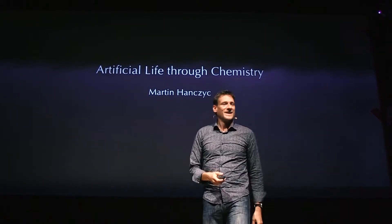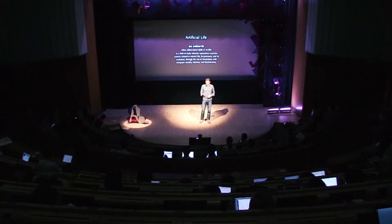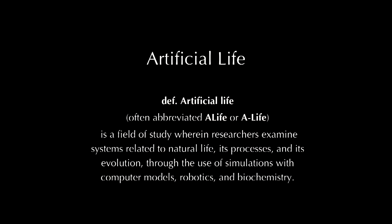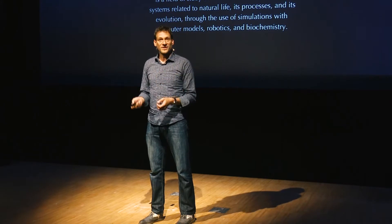I want to introduce you to the topic of artificial life by giving you examples — many movies about artificial life, all laboratory experiments using chemistry. I call this artificial life through chemistry. A-life is a field of study where researchers examine systems related to natural life — so biology, its processes, its evolution — through the use of computers, robotics, and also biochemistry. What I'll be talking about today is artificial life in the context of chemical experiments.